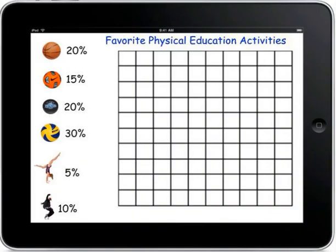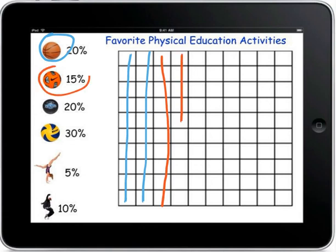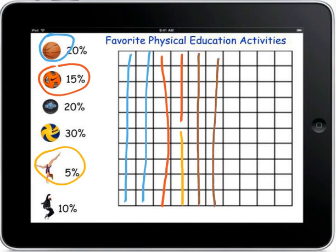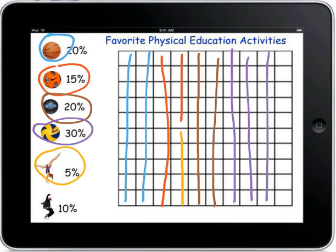So if we replace all of those again on our grid, you will notice that basketball would have 20, soccer would have 15, gymnastics would have 5, hockey would have 20, volleyball 30, and then finally, our last category of dance being 10%.